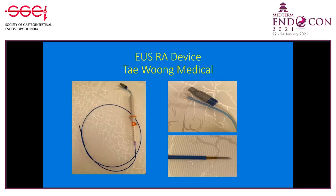There are two principal ways to perform EUS-guided pancreatic cyst ablation. The first and less commonly described is radiofrequency ablation. This is the Taewong EUSRA device — an all-in-one device passed through the accessory channel of the echoendoscope, used similar to a fine needle aspiration needle. At the proximal end is a cooling device and a connector to the electrosurgical generator. On the distal end is an insulated tip and one of three sizes for the ablation zone: 5, 7, or 10 millimeters in length.